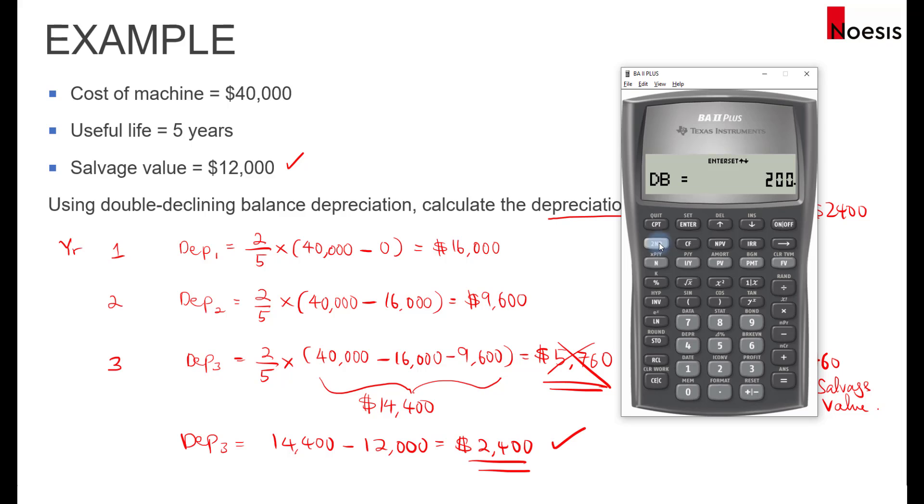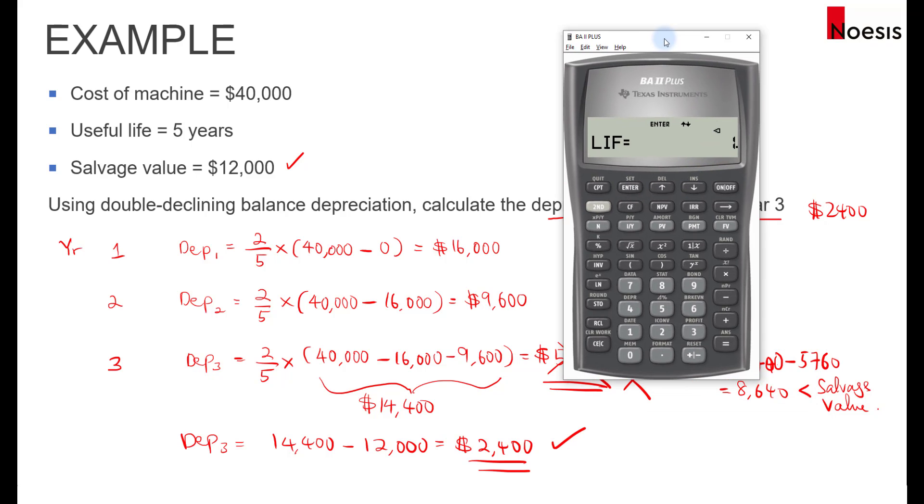If the method shown here is something different, you can always press 2nd enter to change the method until you get DB and then set it equals to 200. If sometimes it may not be 200, you will have to change it yourself. Just press 200 and press enter. Now we'll scroll down. The first thing you'll see here is the life, the useful life, which is five years.